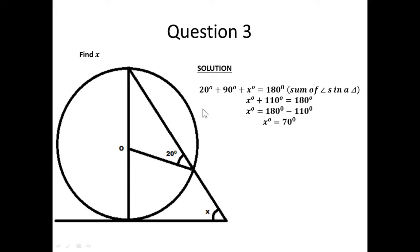Now, looking at this question, you have to find X given this angle is 20 degrees. You can see that from this line to the center is a radius, and from here to here is also a radius. So this is an isosceles triangle, meaning this angle here is also equal to 20 degrees. Also, from what we have proved, a radius perpendicular to a tangent means this angle here is 90 degrees.